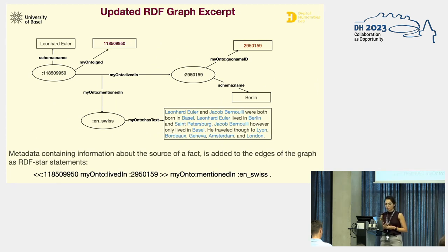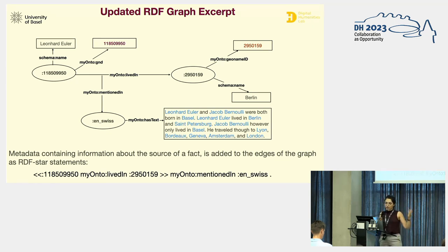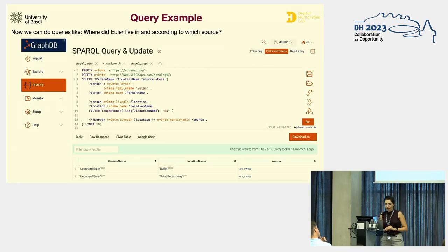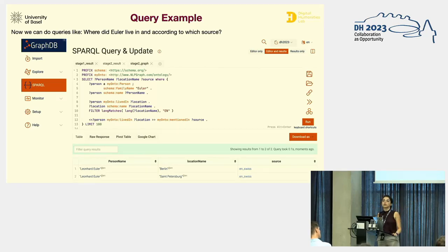For faithful representation of the information, the source of the extracted information is added to the edges of the graph using RDF Star statements. The source document is added through the mentioned-in predicate. The RDF Star triple represents something like: Euler lived in Berlin, and this fact was mentioned in the Swiss document. Through SPARQL Star, one can then query for documents containing a specific relation between entities and their corresponding sources. For example, asking where Euler lived and where that information came from returns: Euler lived in Berlin and in St. Petersburg, both cited from the English Swiss document.